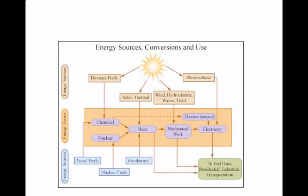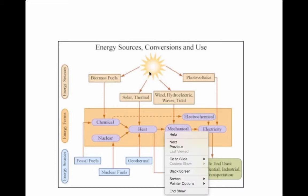Before we get into those details, I want to show you this interesting diagram about how energy flows. Energy flows from a high-quality source — mainly the sun — to a low-quality sink, maybe mainly the temperature of the universe, just a few degrees above absolute zero. You can see the sun creating biomass fuels, thermal energy, wind, hydroelectric, wave and tidal energy, and photovoltaic energy.